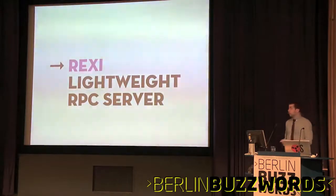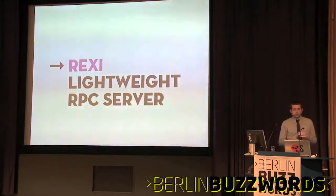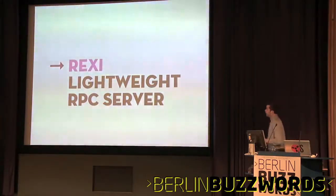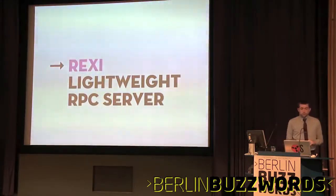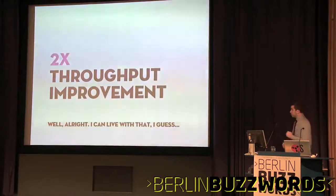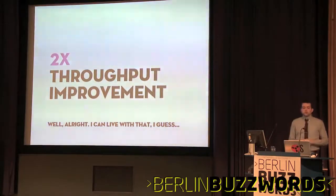We just ripped a bunch of code out, removed a bunch of safeguards, removed middlemen, removed remote processes, and did the signaling out of band. We called that Rexy. It served us pretty well — the first version had a roughly two times throughput improvement, with trade-offs in terms of security. But it was probably the best decision we made at the time: let's reinvent the wheel where we have to.